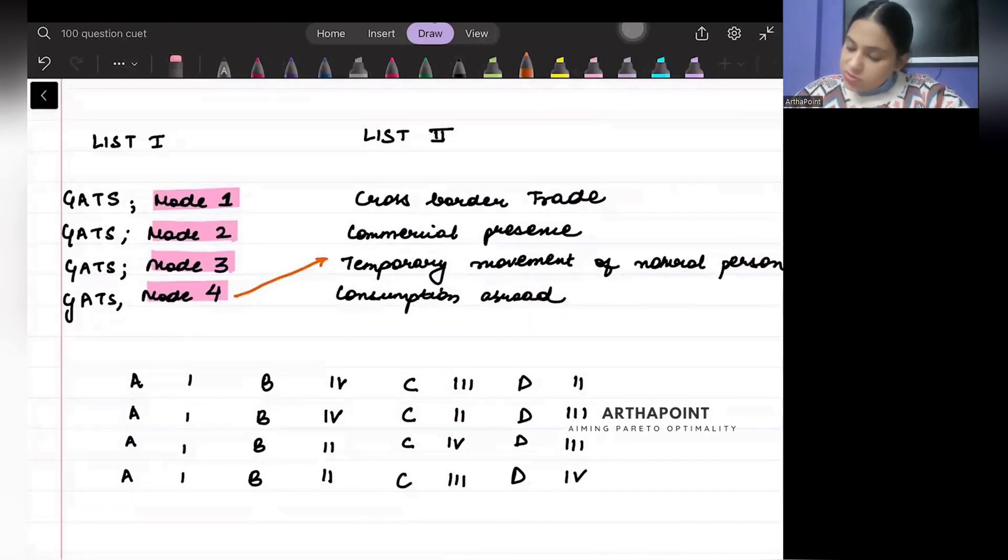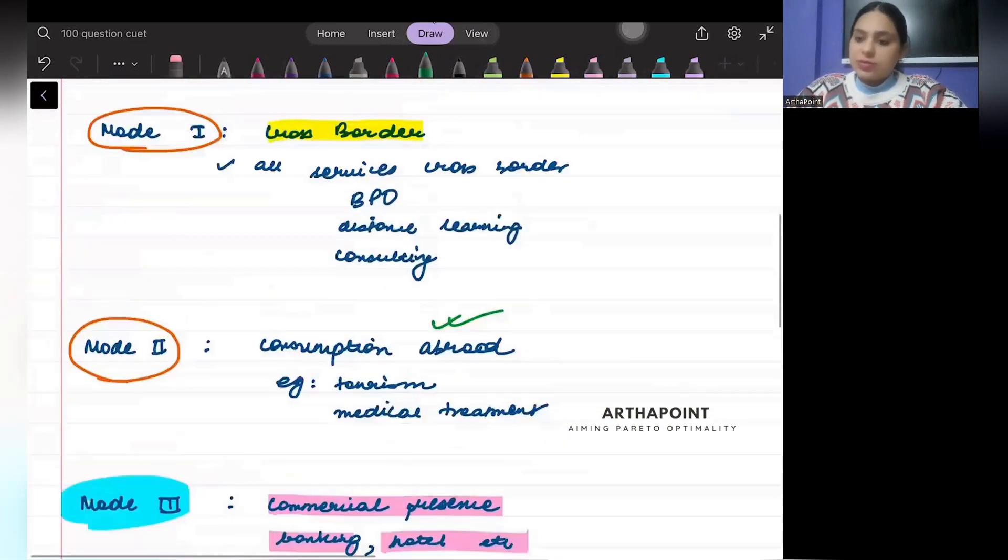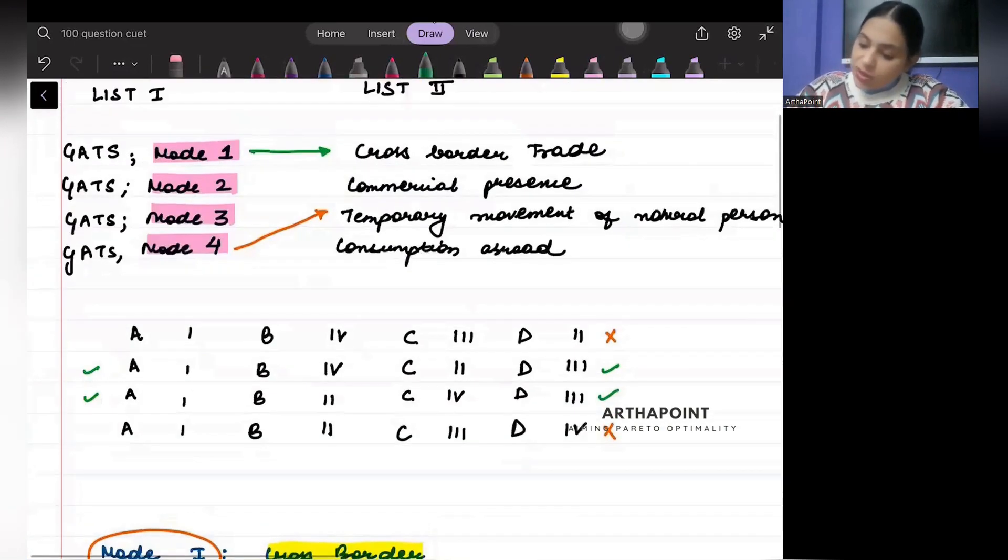So that comes under Mode 4, where people themselves travel. There is a movement of the natural person. So based on that, now we can say that Mode 4 is movement of the natural person, so D can be connected to 3. Mode 1 is cross-border trade, so 1 is related to A. Then we have Mode 2, in which the consumption part, mode 2 refers to consumption abroad. So mode 2 I will be linking to D, which means B is linked to 4.